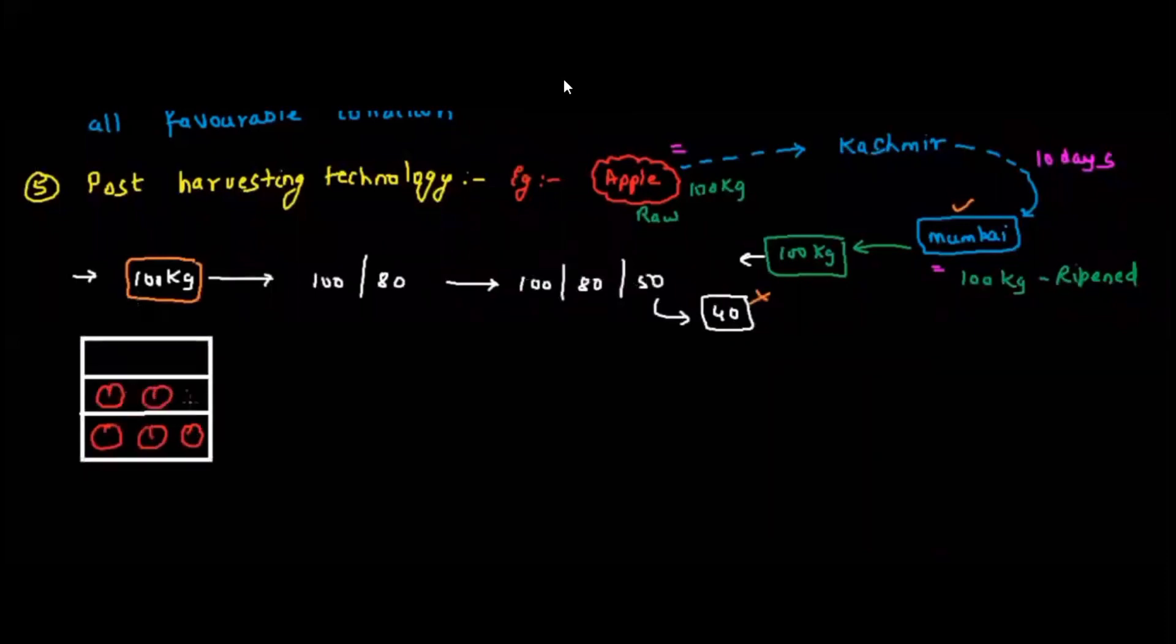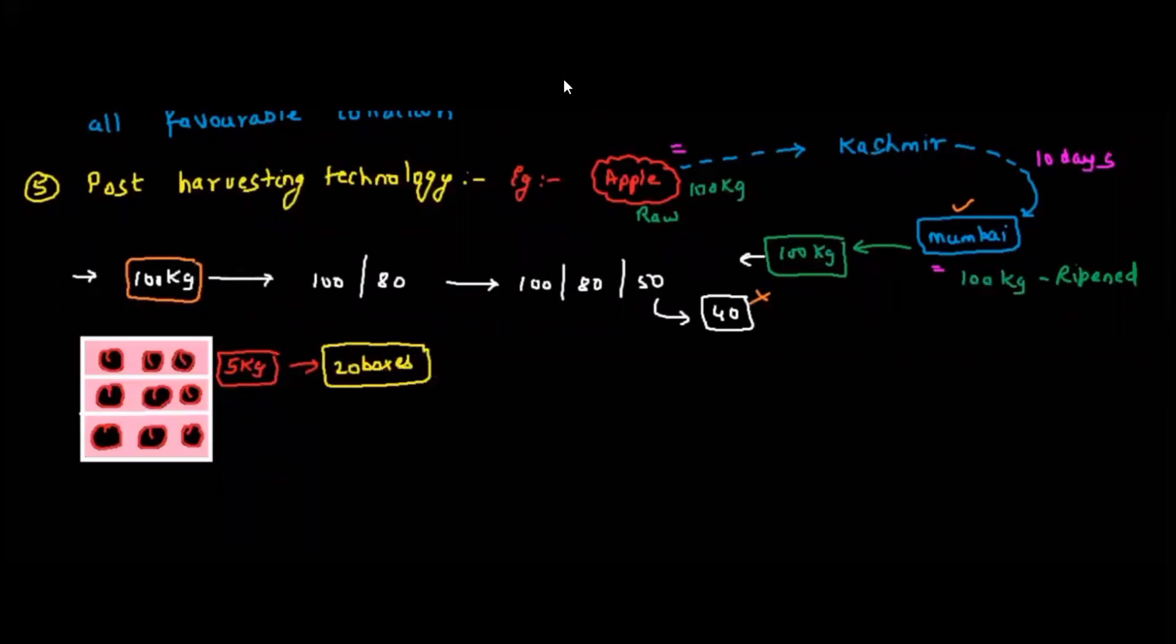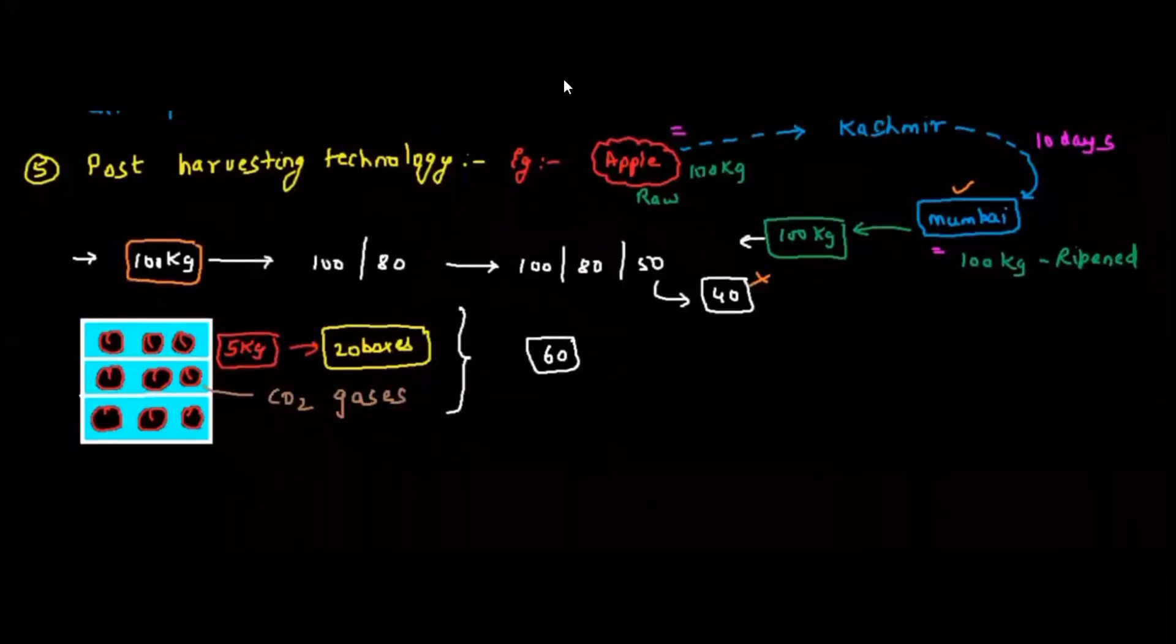In order to avoid all those kind of fluctuation in the prices, what I can do is I will make boxes having 5 kg apples and in each box the apples will be filled up basically with high amount of carbon dioxide. This high carbon dioxide will not allow the ethylene to be released from the apple, and as a result the ethylene will not spread and the apple will remain in normal condition, and then I can sell it at normal price.